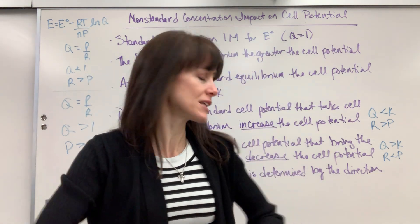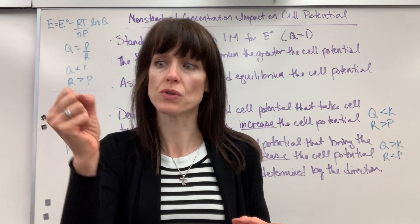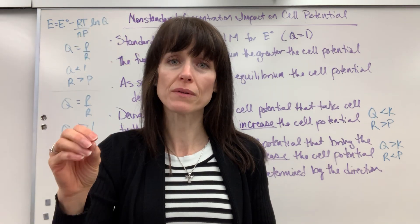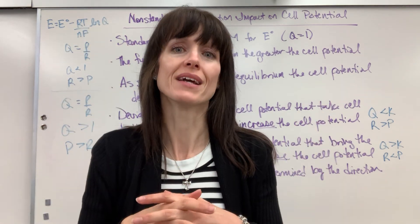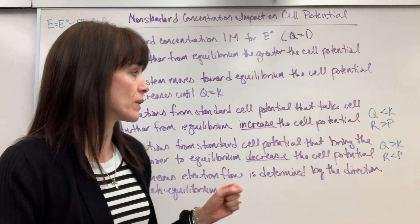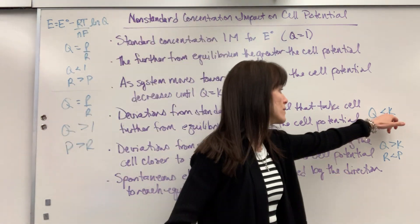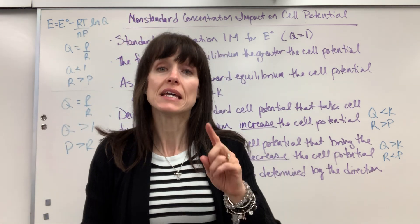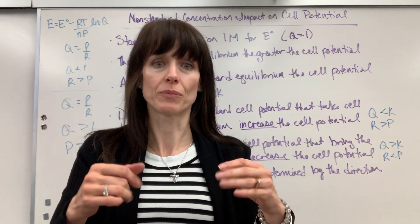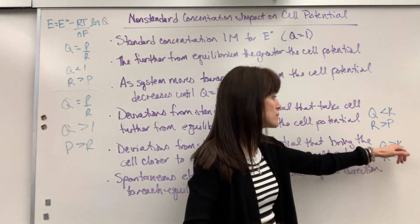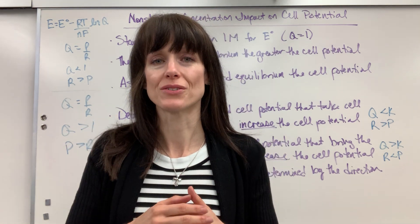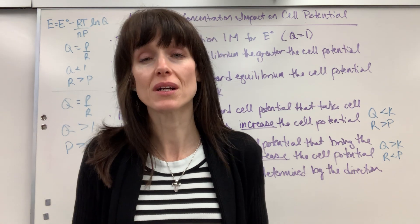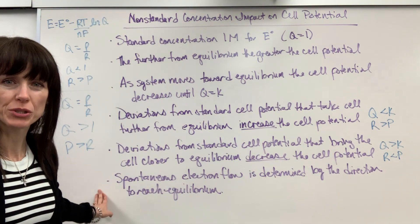That was the Nernst equation justification. Think of it this way: we're driving toward equilibrium, consuming reactants and making products. If you have a lot of reactants, you have greater potential. If you have fewer reactants and more products, you have lower potential because you're close to reaching equilibrium. Your big takeaways: more reactants than products means bigger potential; more products than reactants means smaller potential.